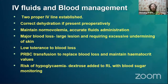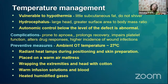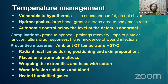Two proper IV lines are sufficient. Dehydration should be corrected and normal volemia maintained. Major blood loss needs to be replaced with packed RBCs. These patients have low tolerance to blood loss and risk of hypoglycemia, so monitor blood sugar and add glucose to Ringer's lactate in IV fluids. They are also vulnerable to hypothermia because of less subcutaneous fat, inability to shiver, large head, and abnormal autonomic control, leading to delayed recovery. Prevent hypothermia by raising OT ambient temperature, using radiant heat lamps, warm air mattresses under the patient's body, wrapping extremities and head with cotton blankets, and using warm infusion solutions and heated humidified gases.